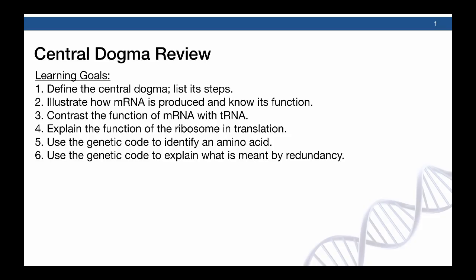There are six learning goals. One, define the central dogma and list its steps. Two, illustrate how messenger RNA is produced and know its function. Three, contrast the function of messenger RNA with transfer RNA. Four, explain the function of the ribosome in translation. Five, use the genetic code to identify an amino acid. And six, use the genetic code to explain what is meant by redundancy.